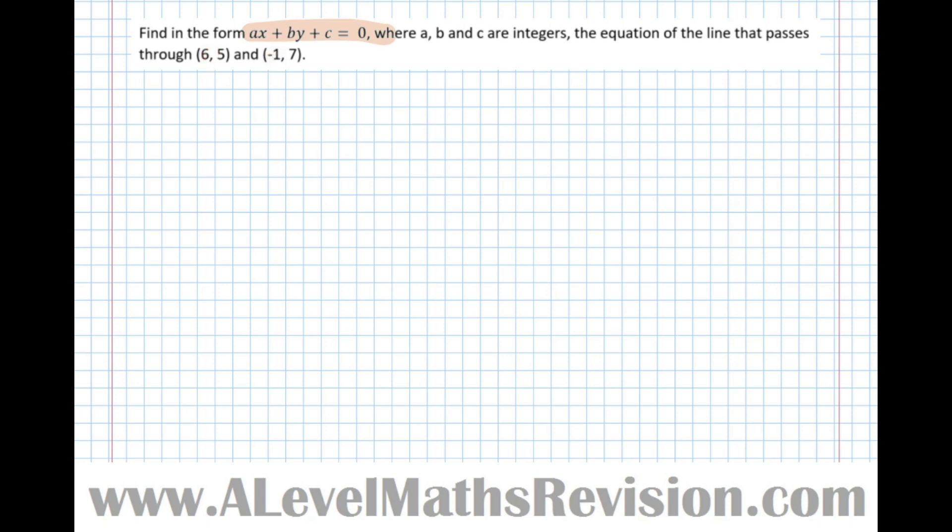Notice we're not given the gradient, so it's our job to work it out. Gradient equals y2 minus y1 over x2 minus x1. It doesn't matter which point we decide to be point 1 and point 2, as long as we're consistent. I'm going to make this x1, y1 and the second one minus 1, 7. So 7 minus 5 over minus 1 minus 6 equals 2 over minus 7. So we've got the gradient there. Already we can see the gradient is a fraction. Y equals mx plus c will be a nightmare using fractions like this.